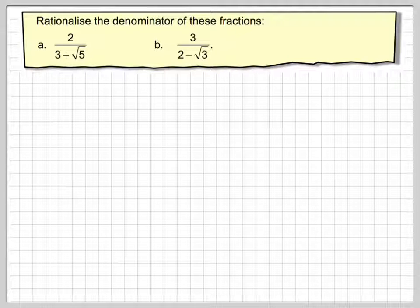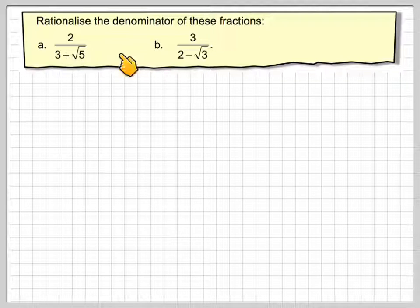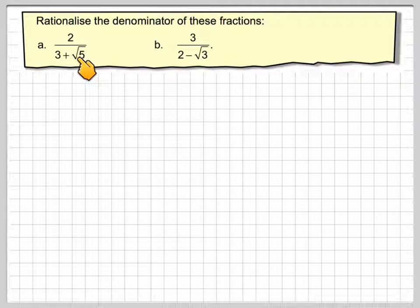Right, in this video we're going to rationalise the denominator of something slightly more complicated. So rationalise the denominator of these fractions, we've got 2 over 3 plus root 5, and b, 3 over 2 minus root 3.